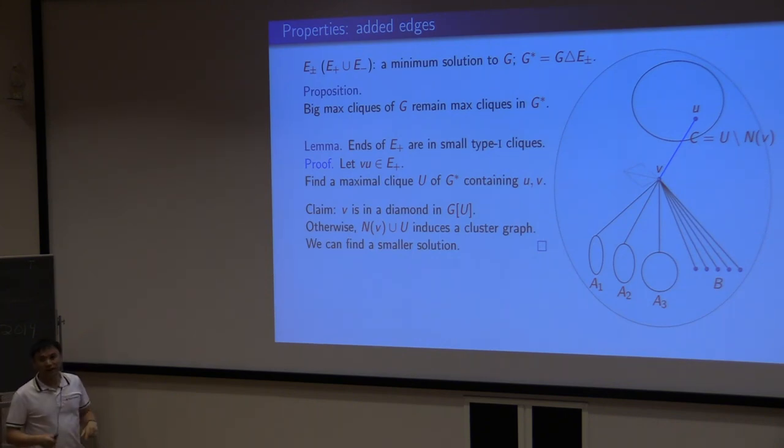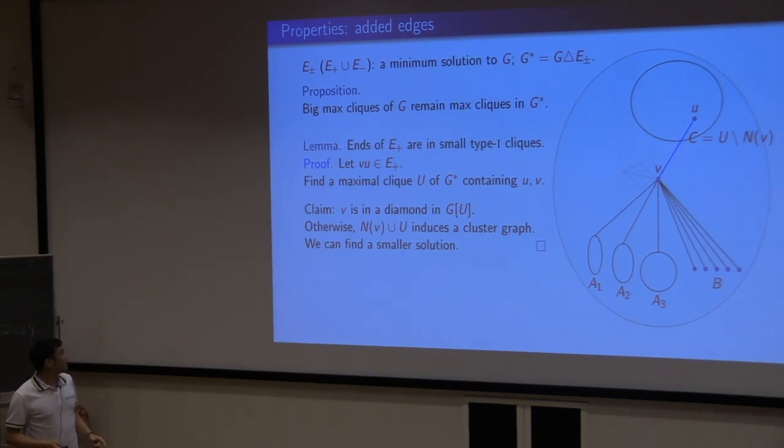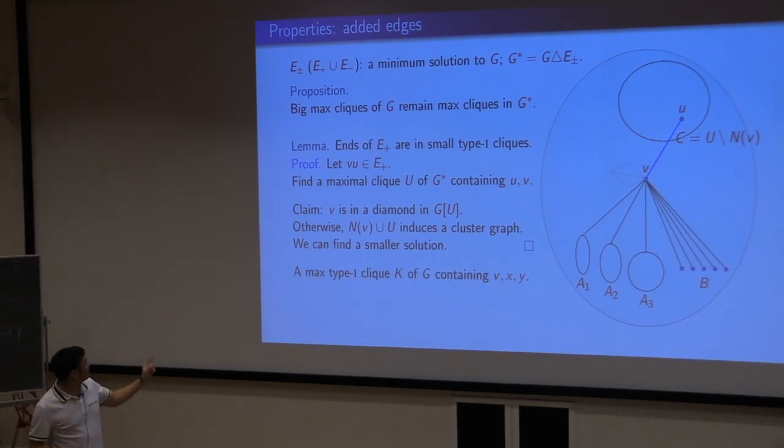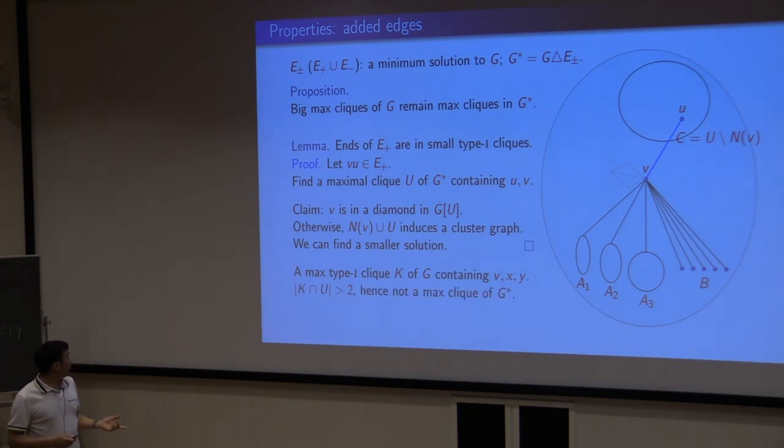In other words, if V is not in the diamond of G of Q, then you have a smaller solution. But this is a minimal solution, so that cannot happen, so we have a diamond. If we have a diamond, then we can find a type one, so bad clique K, containing V and X and Y. This is a maximal clique of G. And this maximal clique intersects Q with at least two vertices. At least three. By the proposition at the top, this one cannot be big. If it's big, then it's a maximal clique of G star, but then G star has two bad cliques. K is small. Every endpoint of every added edge has to be in some small maximum cliques. Small bad cliques. This is the only proof I'm giving, because these kinds of proofs are kind of ugly.